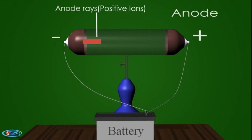3. Anode rays. An anode ray, also known as positive ray or canal ray, is a beam of positive ions that are created by certain types of gas discharge tubes.